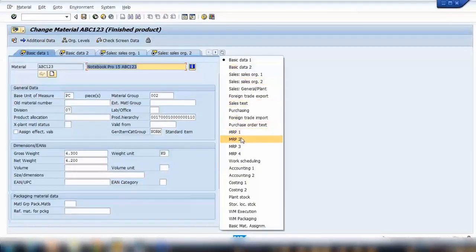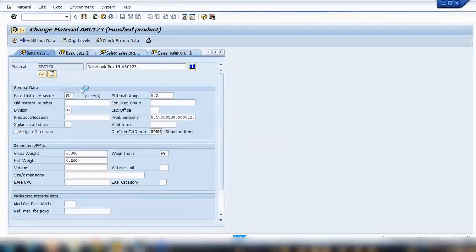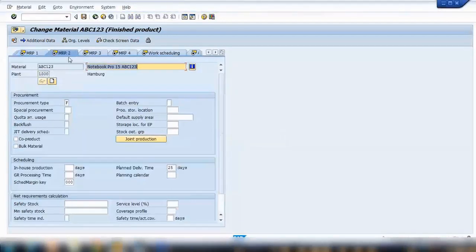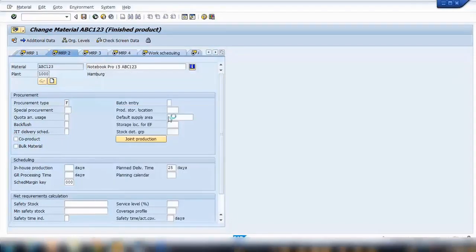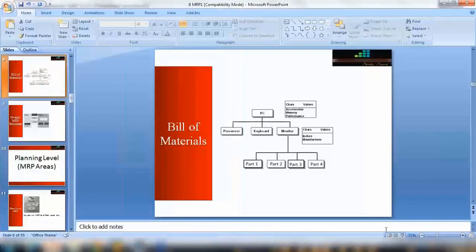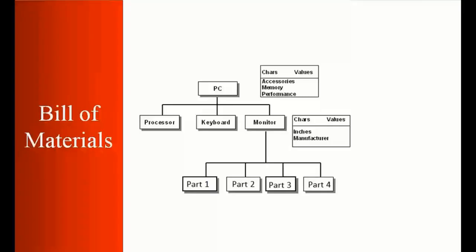Now, if you go to MRP1 or 2 tabs, here under MRP2 tab, you can see procurement type is F. If you open that, you can see F stands for external procurement - procurement from the external vendor. E stands for in-house, that means within the company we will be manufacturing it in the production. And X means can be both. Sometimes it can be both, but you use either external or in-house.